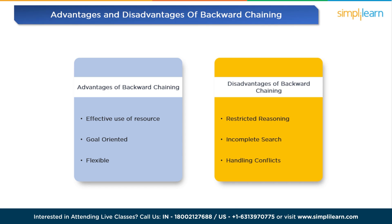Disadvantages of backward chaining: while employing backward chaining for problem solving, it functions unidirectionally, potentially lacking the ability to generate innovative solutions or insights not explicitly programmed. There are instances of limited exploration where it may yield incomplete outcomes and overlook comprehensive solution exploration. Additionally, conflict resolution can be challenging with backward chaining, especially when reconciling discrepancies or clashes among various rules or facts.